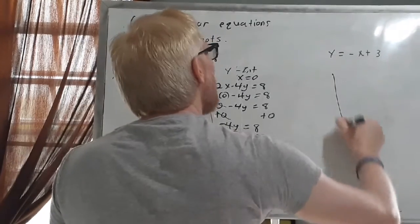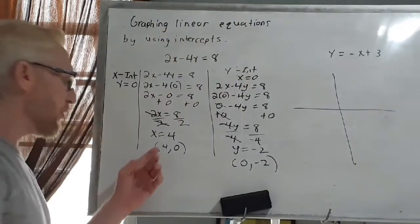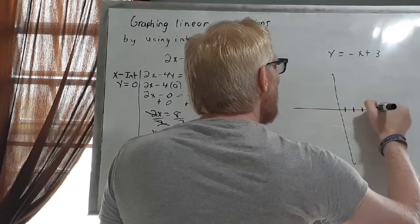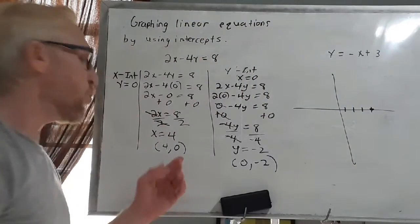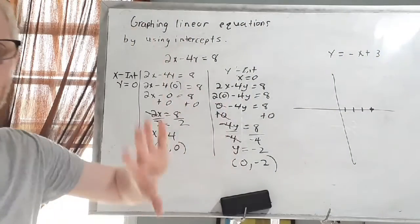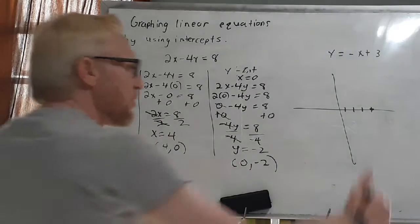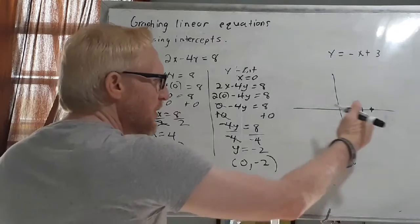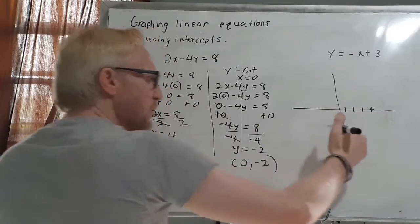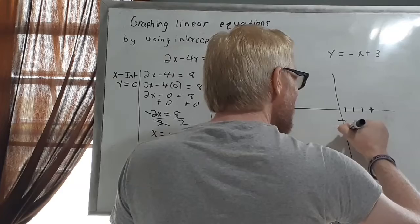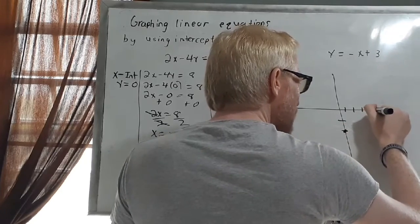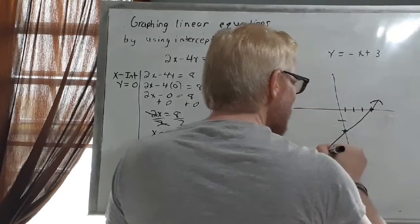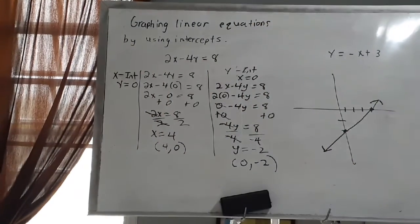Now to graph the function. I have the first ordered pair (4, 0), meaning I move 1, 2, 3, 4 spaces to the right, and since y equals 0 I don't move up or down — it stays right there. The other ordered pair is (0, negative 2): since x is 0 that's at the origin, and y is negative 2 so I move 2 spaces down — 1 and 2. Then I graph my function and that is the end of that exercise. Very simple, very easy.